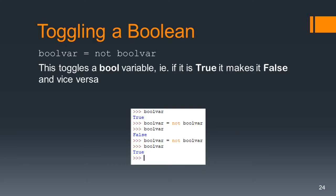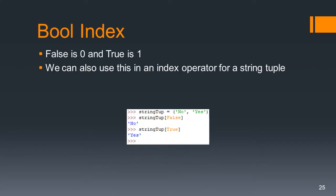We're also going to take advantage of another feature of boolean variables - the fact that False is actually zero and True is actually one. So we can use a boolean variable as an index operator into a string tuple. In the shell window, type string_tuple equals a two-string tuple with 'no' and 'yes'. Now if you say string_tuple of False, it returns 'no', and string_tuple of True will return 'yes'. So we're going to take advantage of this nice little feature.